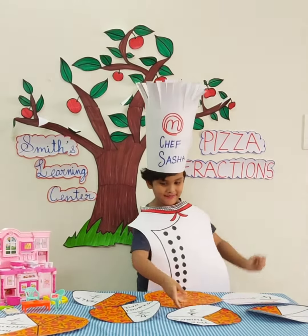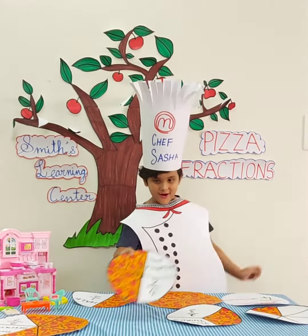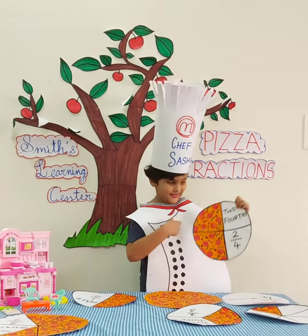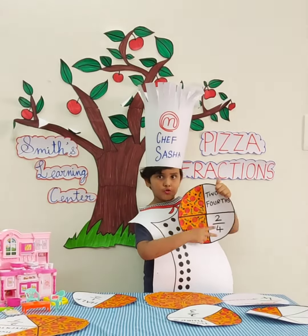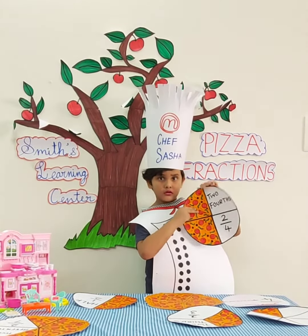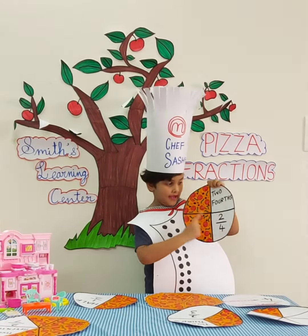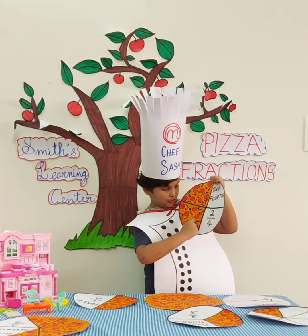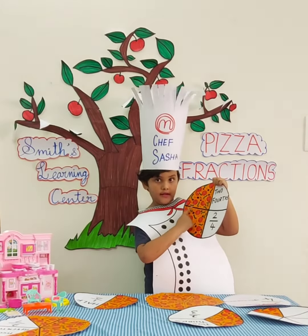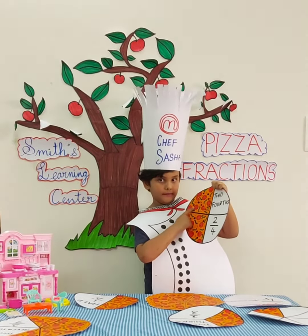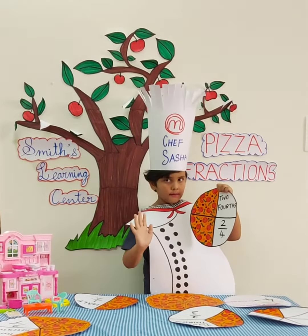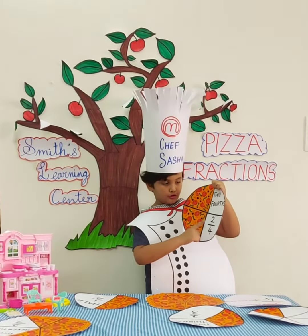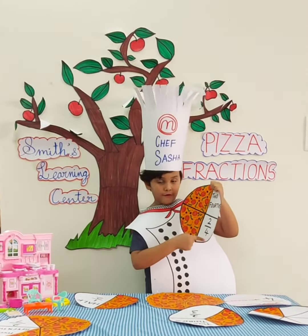Let's take the next one. Some pieces have been eaten. Let's count them. One, two, and three, and four. So four pieces total — two over four.